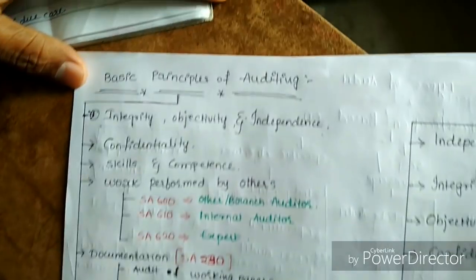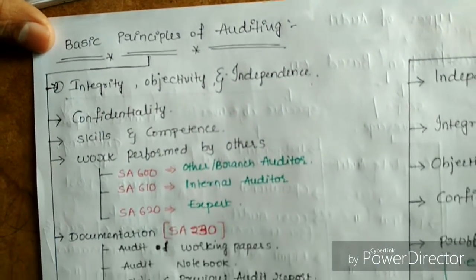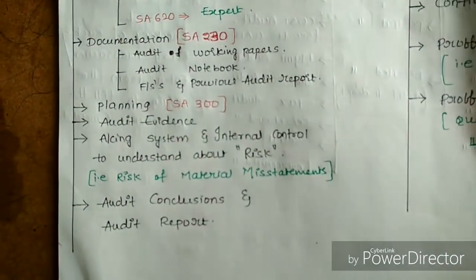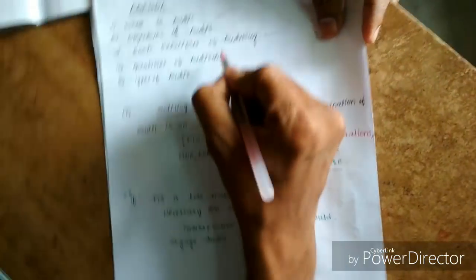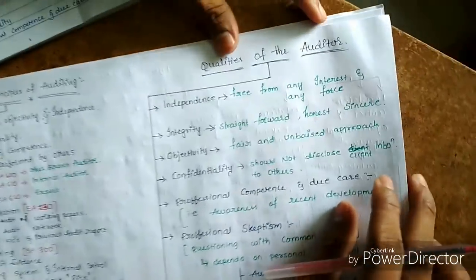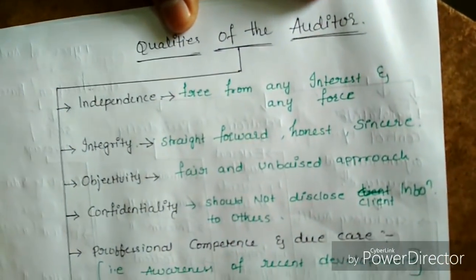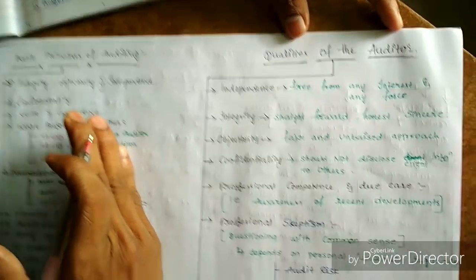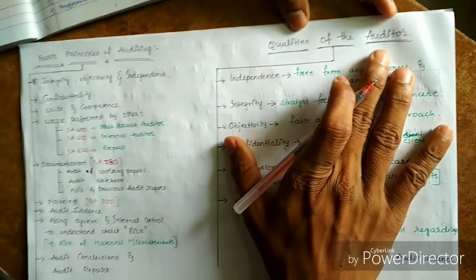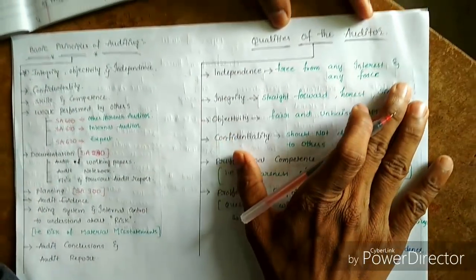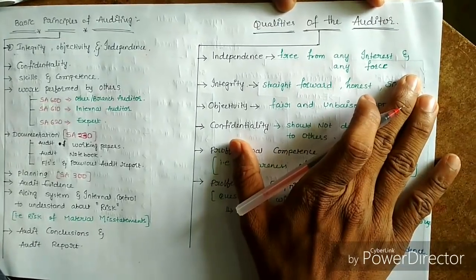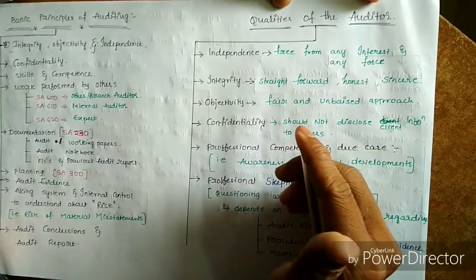These are the traditional basic principles which govern auditing. Next, we will look at the fourth topic: qualities of an auditor. It may seem similar to basic principles of auditing, but this focuses on what qualities an individual auditor should possess to be an auditor.